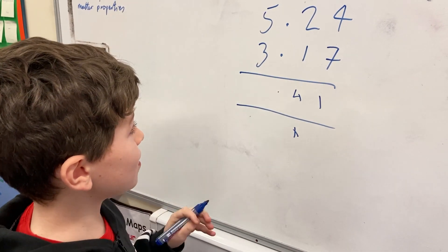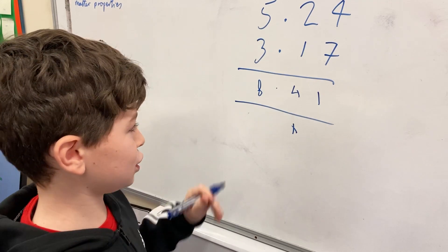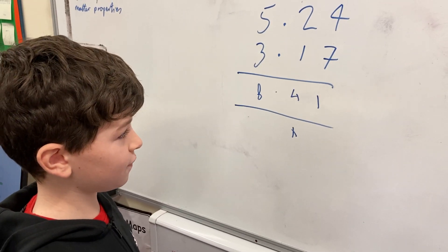Then we've got five plus three, which is eight. And then that should be your answer: eight point forty-one.